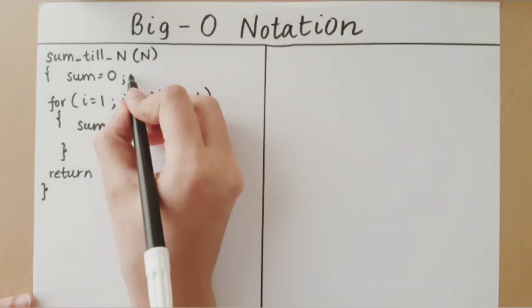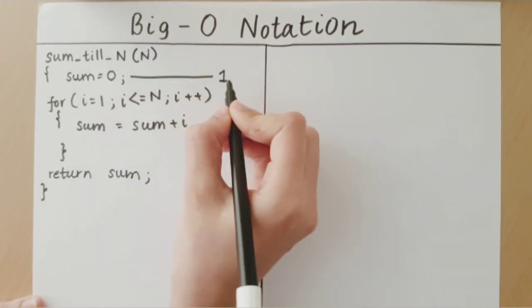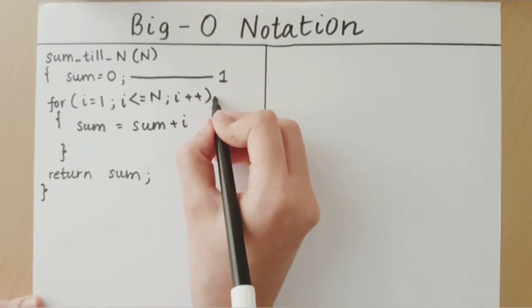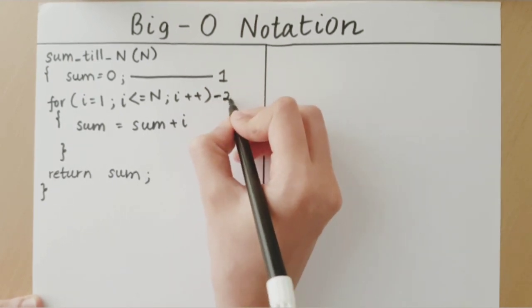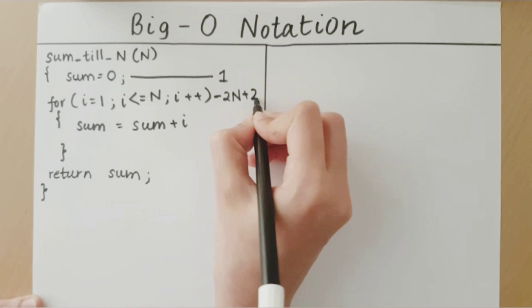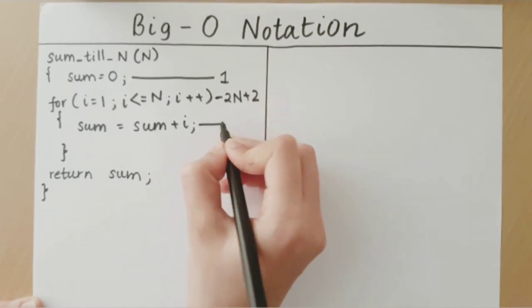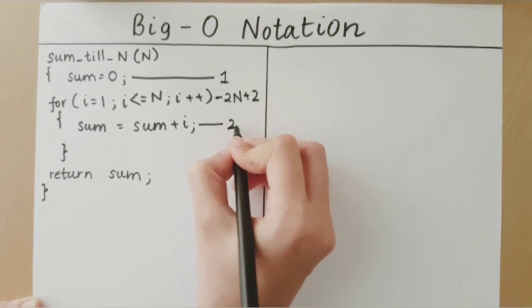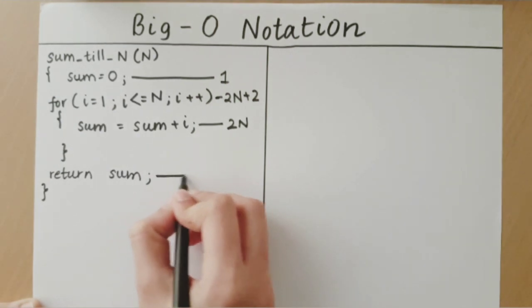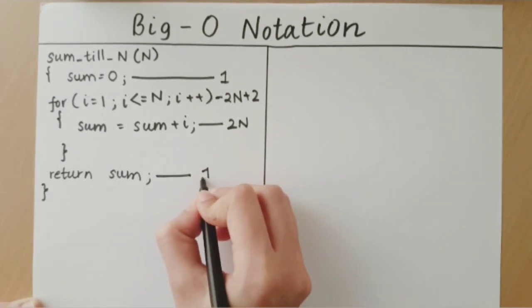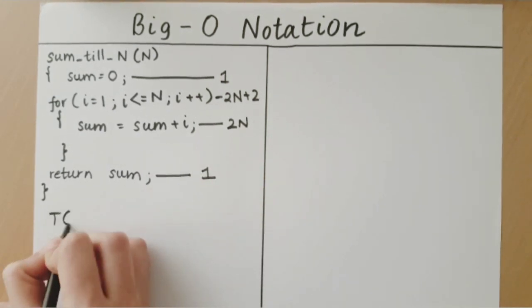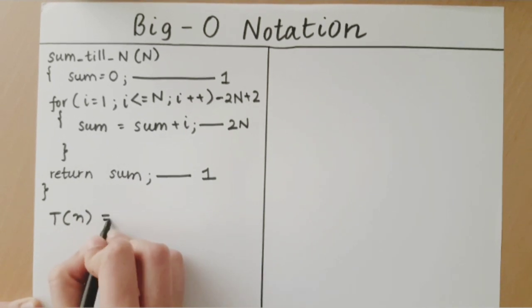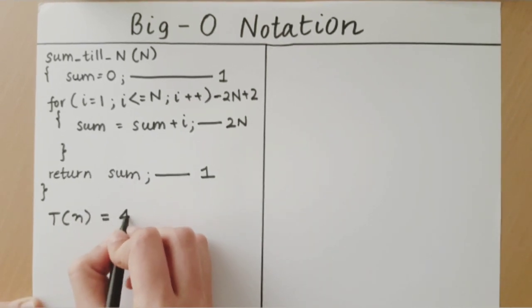As you know, the first step is going to take unit time, the second step will take 2n plus 2 time, this step will take 2n and returning the sum will take 1 unit of time. In total, the time taken will be 4n plus 4.